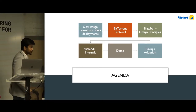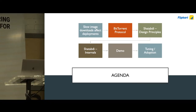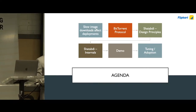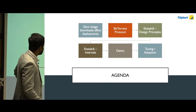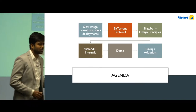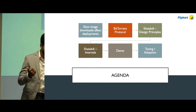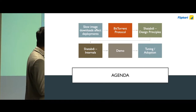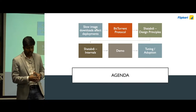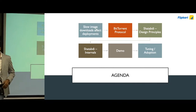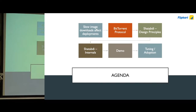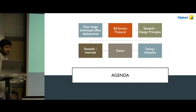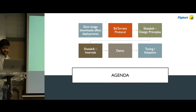Hello everyone. Today I'm going to speak about our journey of building an object distribution system which essentially uses a peer-to-peer networking protocol. As we were recently mentioning, this is about torrents. We had a problem in Flipkart which was basically slow deployments. I'll begin with explaining the problem and how BitTorrent came to the rescue, how we built a platform which uses torrents to orchestrate downloads in our data center, and we'll go through a demo and our tuning and adoption exercises.